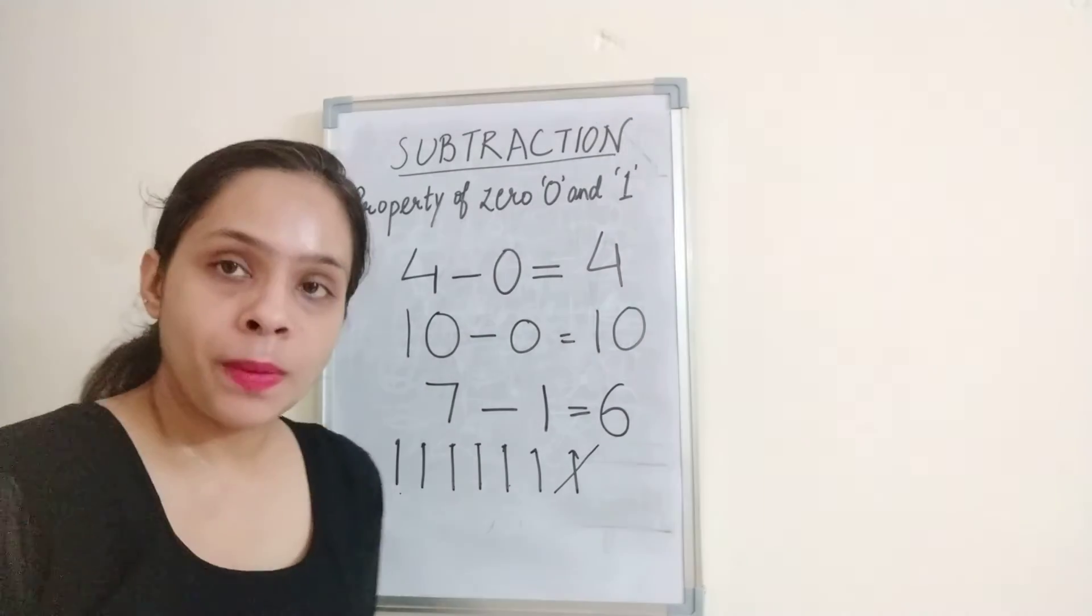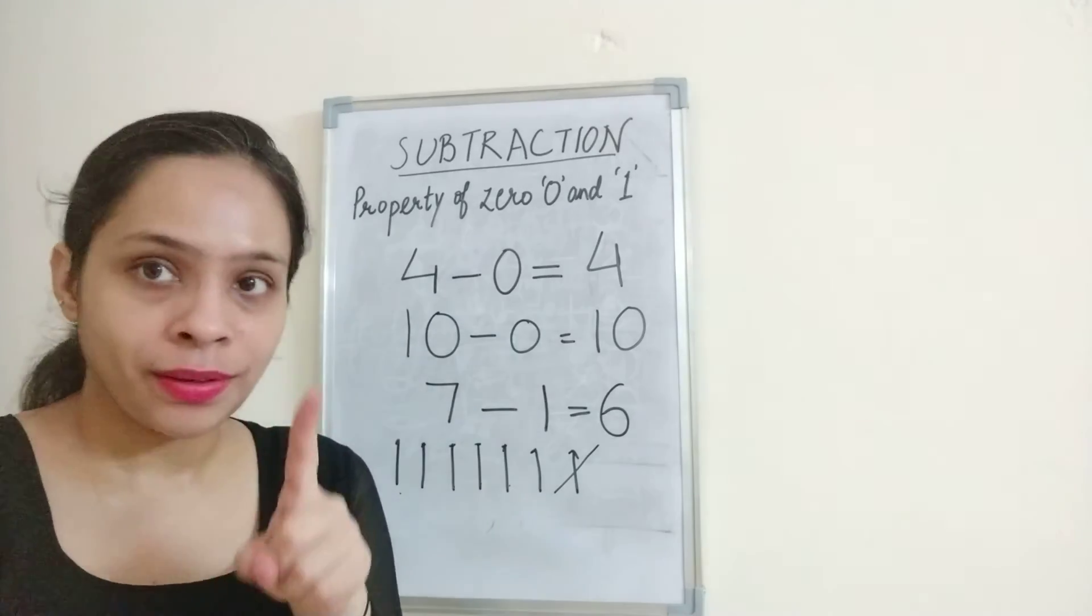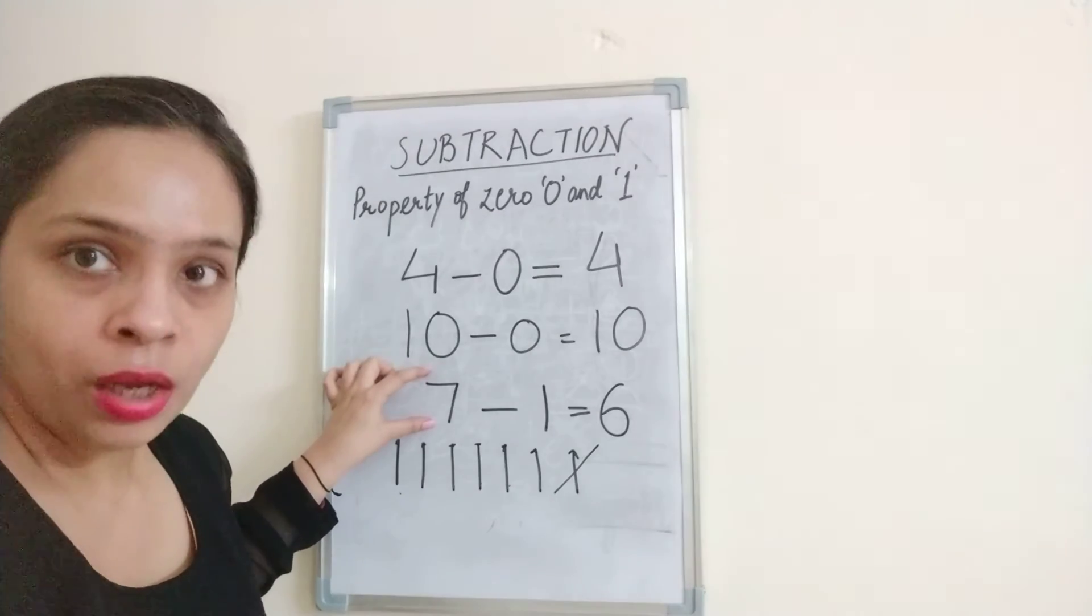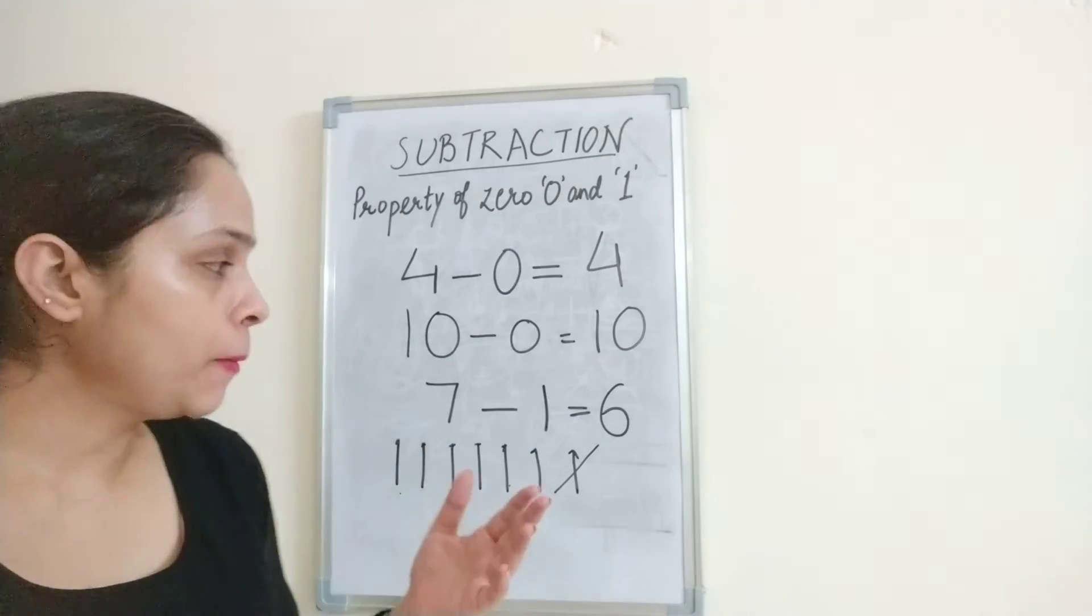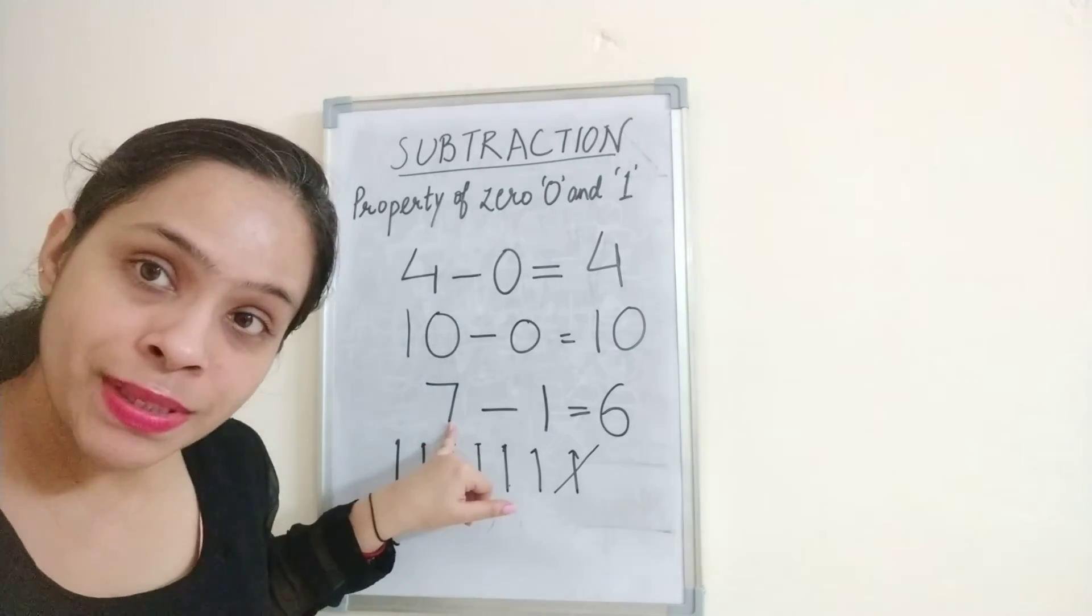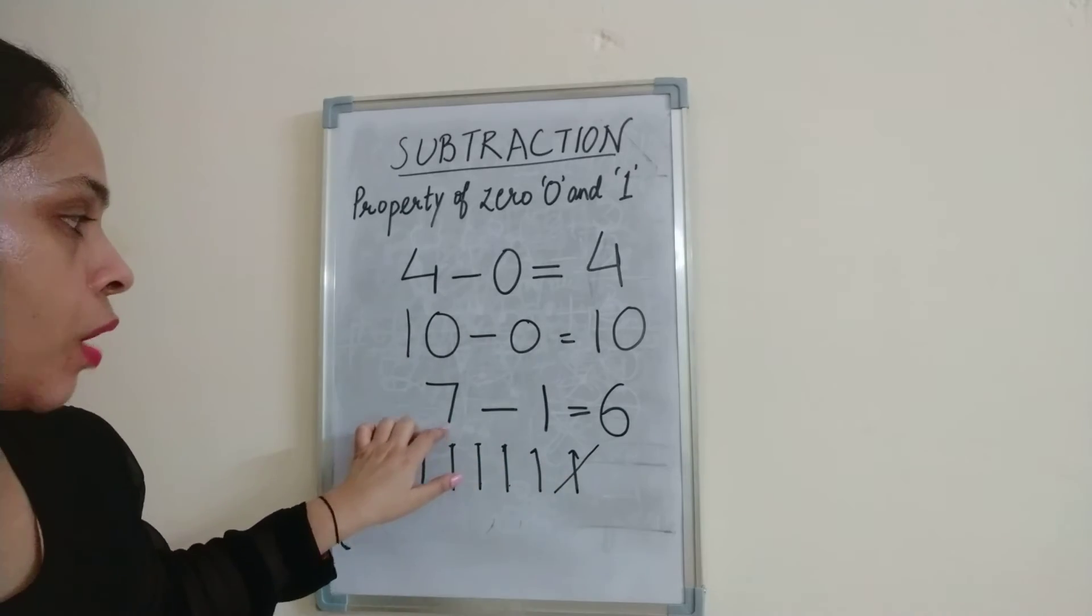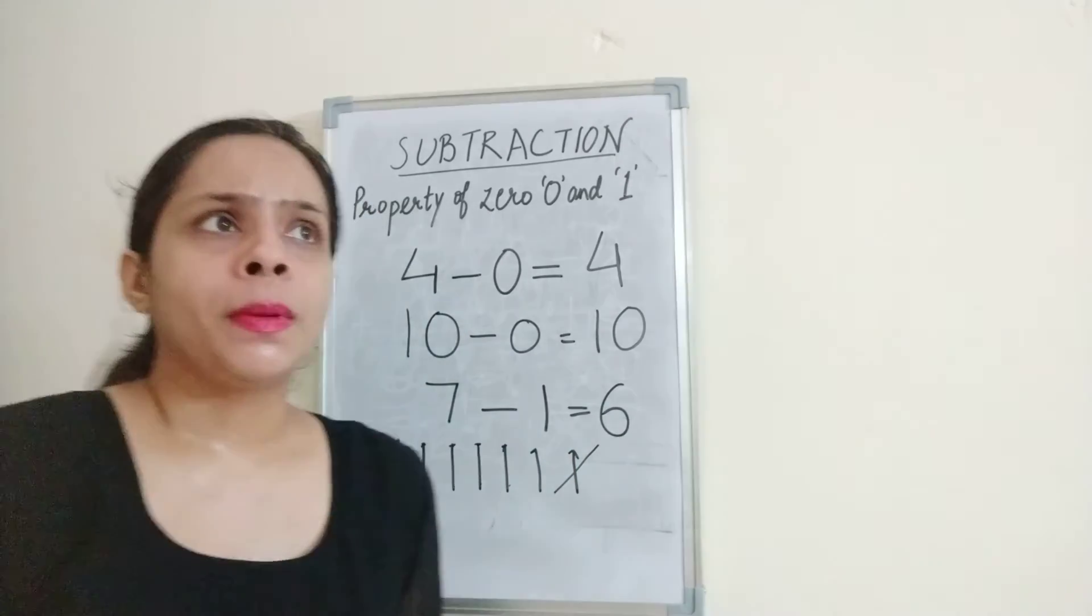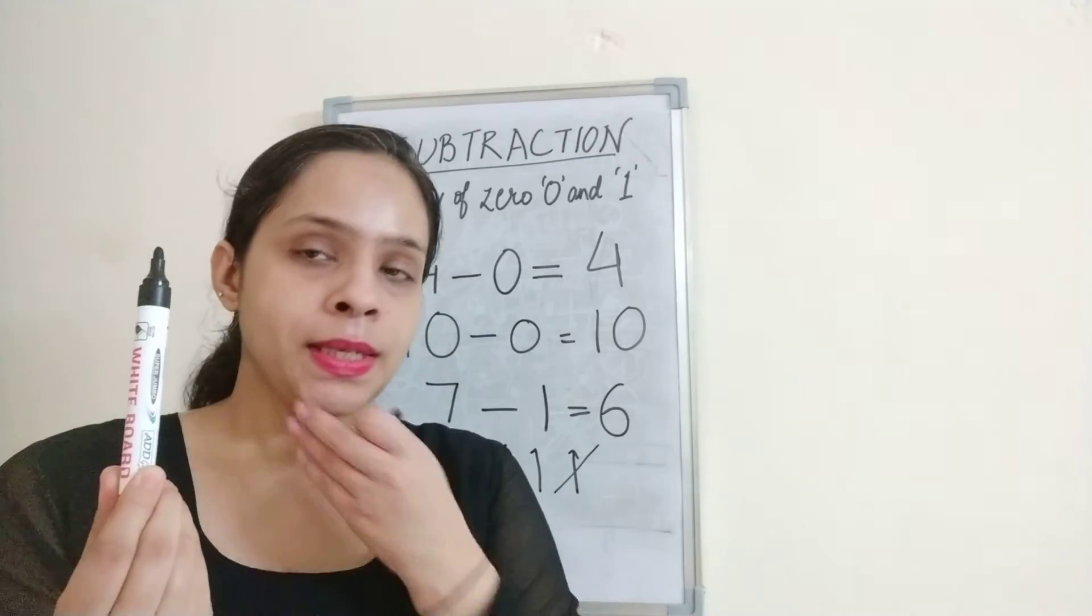When we have one number, we have done the number, we have done after and before in the last chapter. So what is the number before 7? Which number comes before 7? 6 comes. Which number comes before 8?